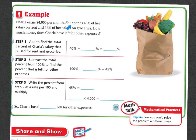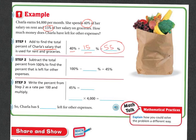Charla earns $4,000 per month. She spends 40% of her salary on rent and 15% on groceries. How much money does Charla have left over for other expenses? First, we need to add to find the total percents used for rent and groceries: 40% plus 15% equals 55%. So 55% of her salary is used for those items. Then subtract from 100%: 100% minus 55% leaves 45% remaining.